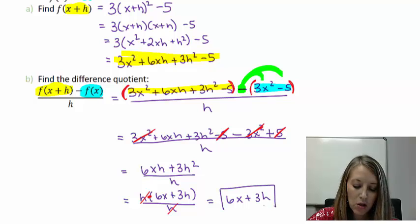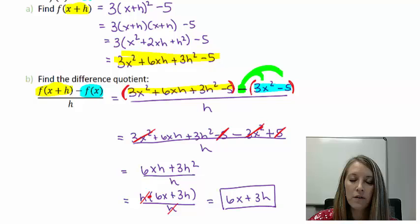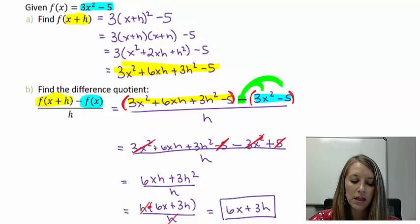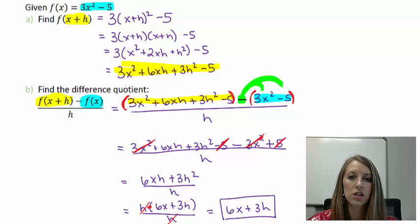So we started with a large, very messy fraction or very messy problem. But the wonderful thing about difference quotient is most everything ends up canceling out, and so we end up with a very nice answer down there: 6x plus 3h. So if you can handle this, that means you are ready to move on to calculus. And this is the perfect time to end our composition of functions. See you next time.